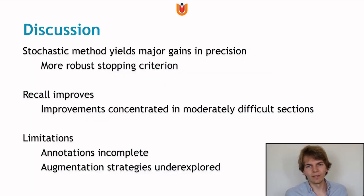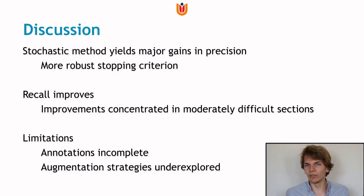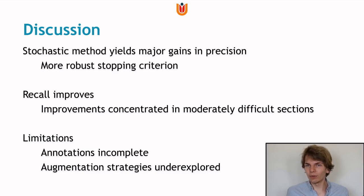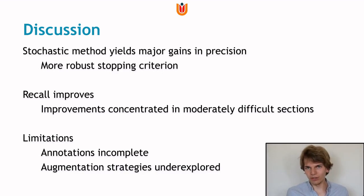What do we see in these results? First, the stochastic algorithm leads to much higher precision, meaning the agent-based stopping criterion is more reliable than the previously used logit confidence thresholds. Recall also improves, but not as consistently — improvements are mainly concentrated in moderately difficult sections where the baseline method would sometimes fail, because the stochastic algorithm has more attempts to get it right and as long as the majority gets it right the section is tracked correctly. In very difficult sections, such as near air bubbles and image artifacts, this does not help, as the majority of agents will either disagree or terminate by themselves.